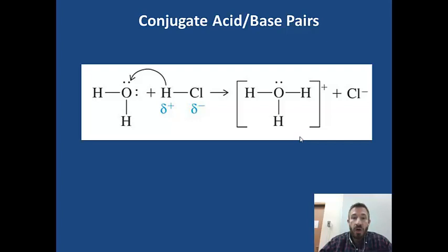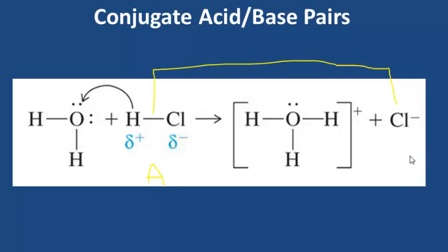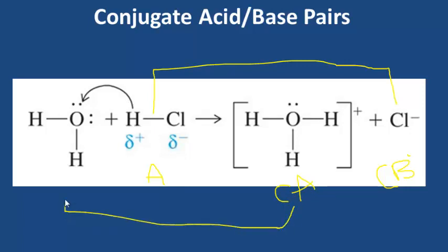Let's identify conjugate acid-base pairs. In the reaction of hydrogen chloride with water to form hydronium and chloride ion: HCl is the acid, and its conjugate base pair is chloride ion because the only difference is losing the proton. Hydronium is the conjugate acid, and the base that pairs with it is water, since water accepted a proton from HCl.